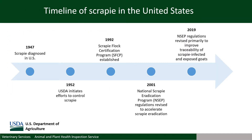Scrapie was not always present in the United States. In 1947, Scrapie was first observed in the United States in a sheep flock in Michigan, believed to be introduced through the importation of a British-origin sheep via Canada. In 1952, Classical Scrapie was observed in two additional states, and the USDA initiated a program to control Scrapie in response to an emergency request from industry.